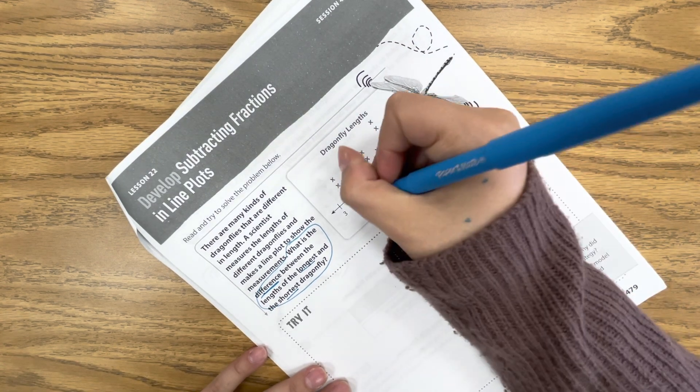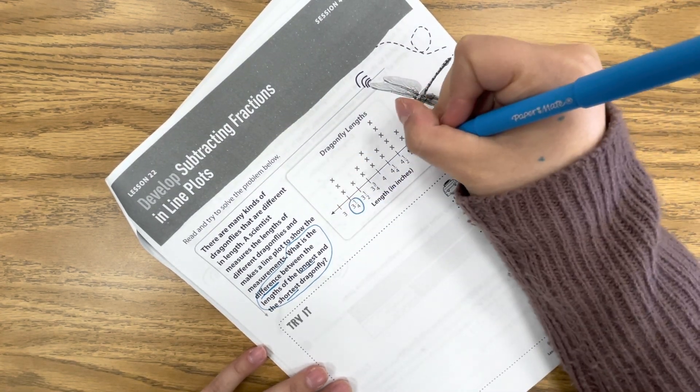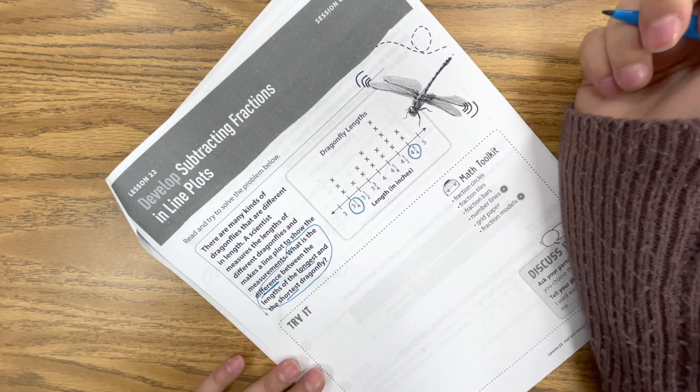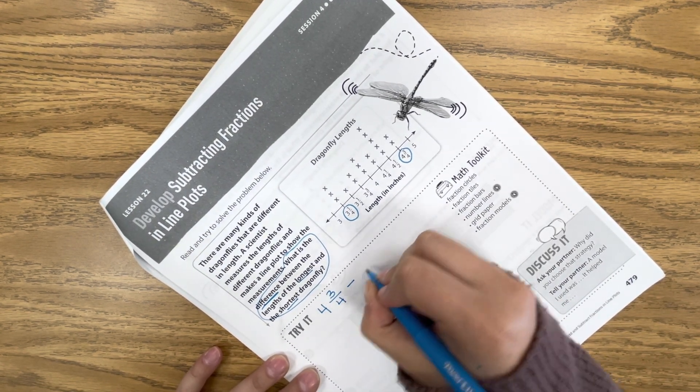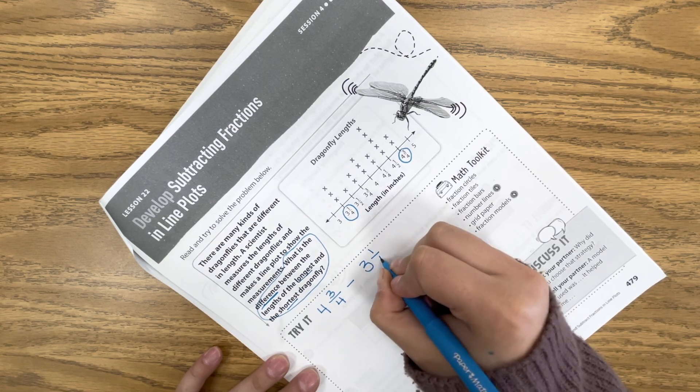So we have the difference again which we know from previous lessons that means subtraction and it's between the longest and the shortest dragonfly. So it looks like here the shortest is three and one-fourth and then the longest with data points is four and three-fourths.